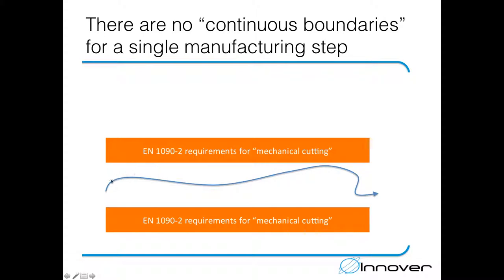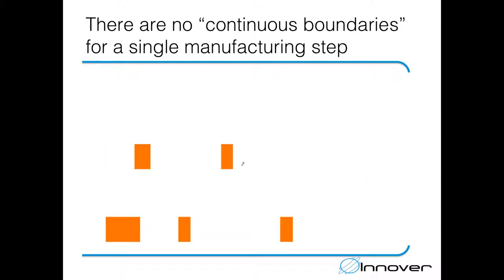A more accurate representation would describe these requirements, boundaries, or guidelines as sporadic. The manufacturing process involves many steps — checking the company specification, collecting material, adjusting the plate, and so on until the product is released to the next process — but the requirements don't cover all of these continuously.